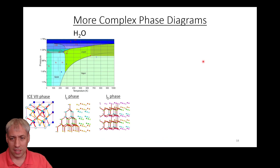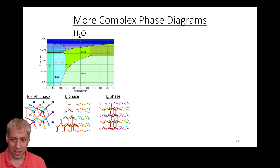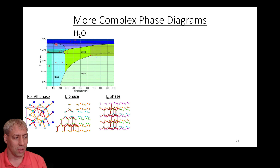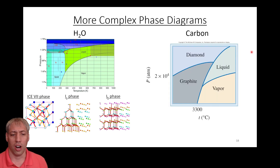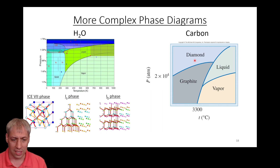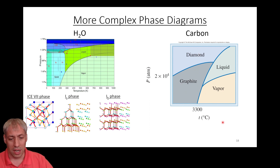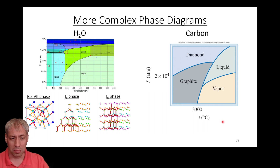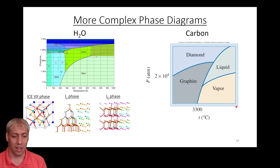Phase diagrams can get really complex. The actual water diagram has all sorts of different phases of ice depending on how it crystallizes — different densities, different transition temperatures — only one vapor phase and one liquid phase but many different solids. Carbon is another example: it can exist as diamond, graphite, liquid, or vapor, with two different triple points. This is why squeezing graphite hard enough turns it into diamond — you cross a line and have a phase transition from one type of solid to another. The graph is information-dense: it tells you phases, transition temperatures and pressures, and densities.